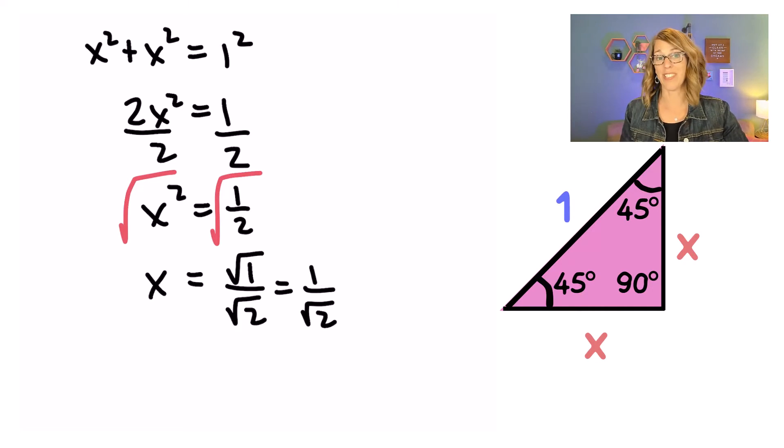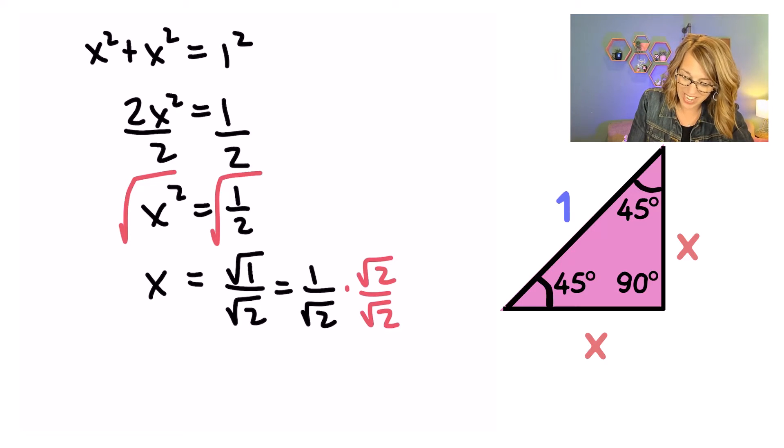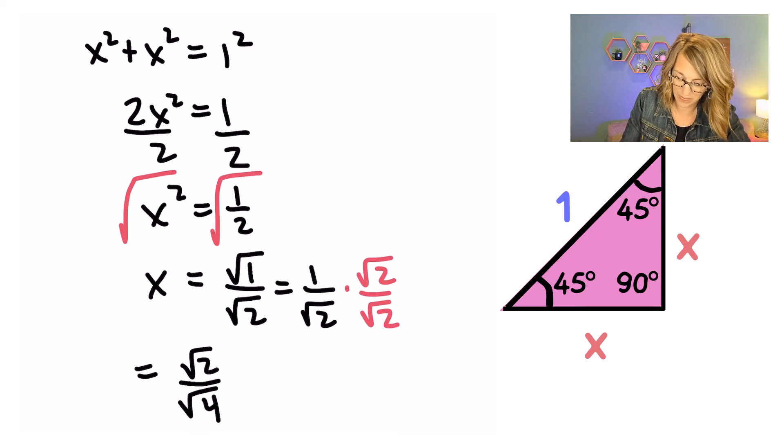We could either express it like this or I can rationalize by multiplying the top and the bottom by the square root of 2. We only do this to simplify so we don't have a square root in the denominator. If we do this, we end up with a radical 2 in the numerator and a radical 2 times a radical 2, which is a radical 4 in the denominator. That gives me one other form of that value for X, which would be the square root of 2 over 2.